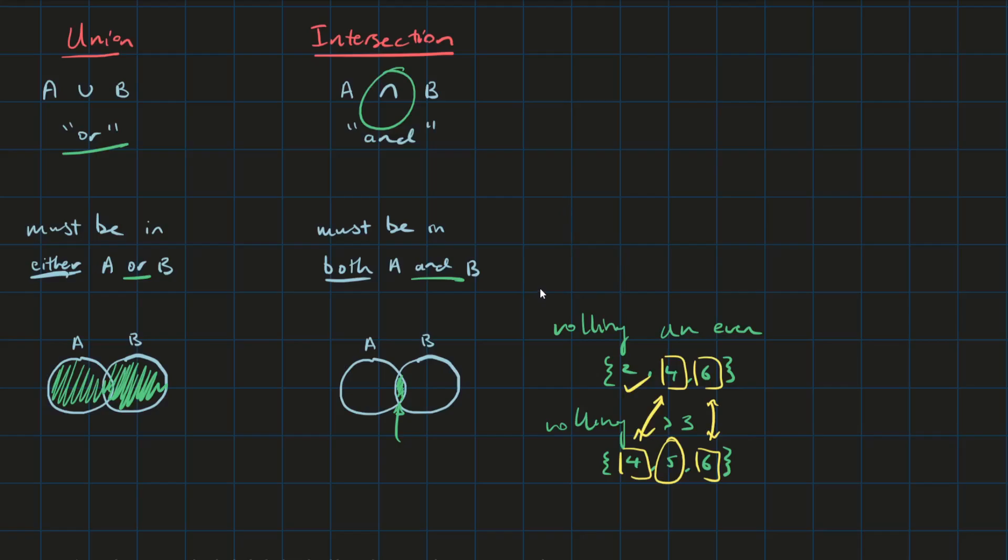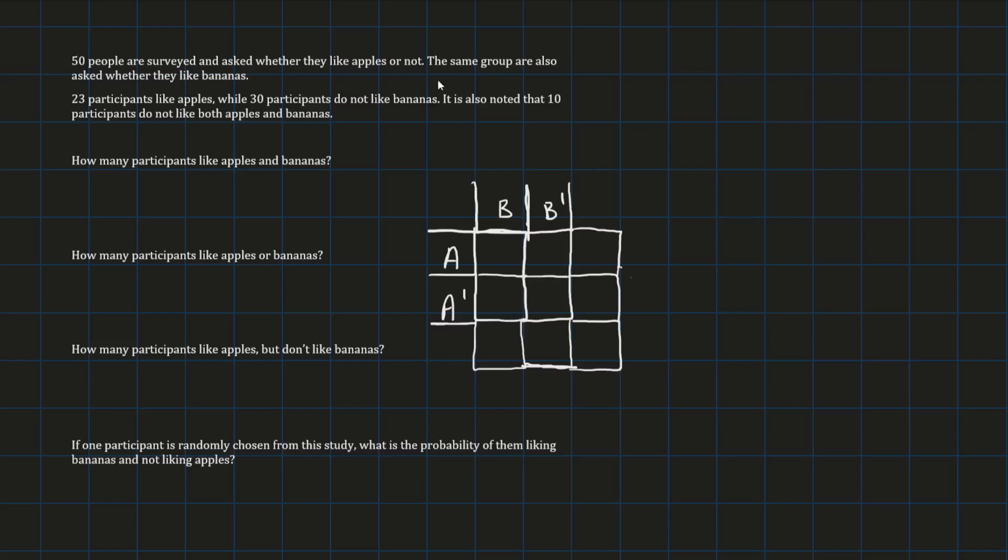Now, to discuss these operators a bit further, we'll go into this example here. 50 people surveyed and asked whether they like apples or not. The same group are also asked whether they like bananas. 23 participants like apples, while 30 participants do not like bananas. It is also noted that 10 participants do not like both apples and bananas.